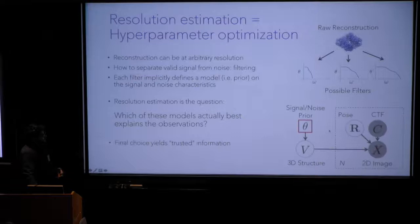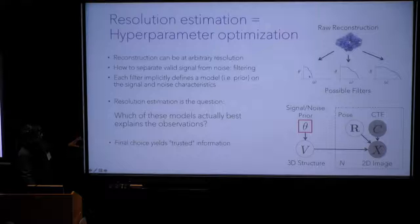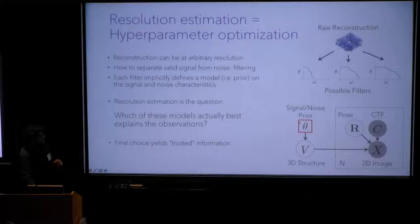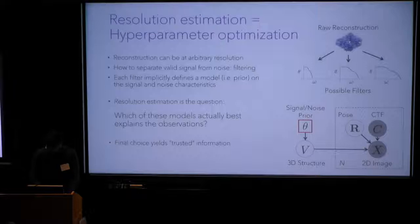Thinking about resolution in this sense, we can connect this to the broader picture of 3D reconstruction in cryo-EM as a statistical inference problem. This is a probabilistic graphical model depicting the familiar pieces: we observe images, they have some CTFs, we estimate latent variables like pose, and we use those images to infer a 3D structure. The choice of what signal to trust corresponds in this model to a prior on 3D structures. That prior has hyperparameters, which we refer to as theta. So resolution estimation ends up being the same as selecting or optimizing these hyperparameters of this prior.